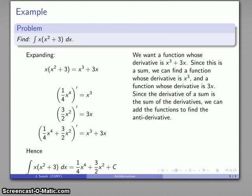So that tells me the anti-derivative is going to be the sum of a quarter x to the fourth, 3 halves x squared, and then some constant.